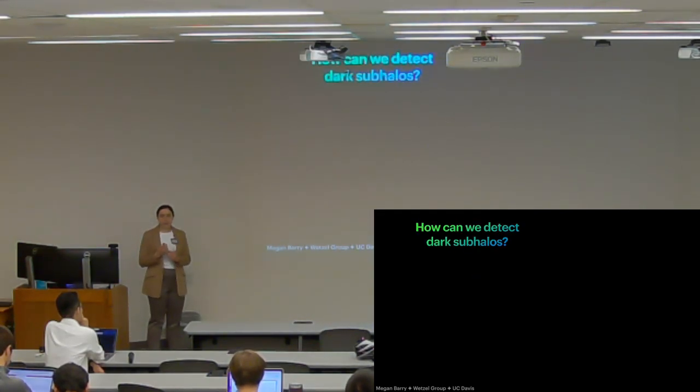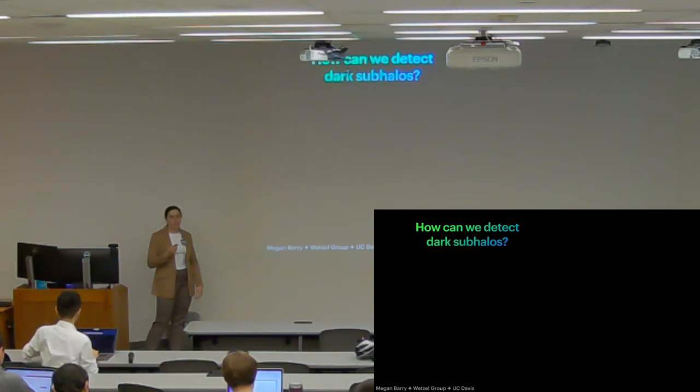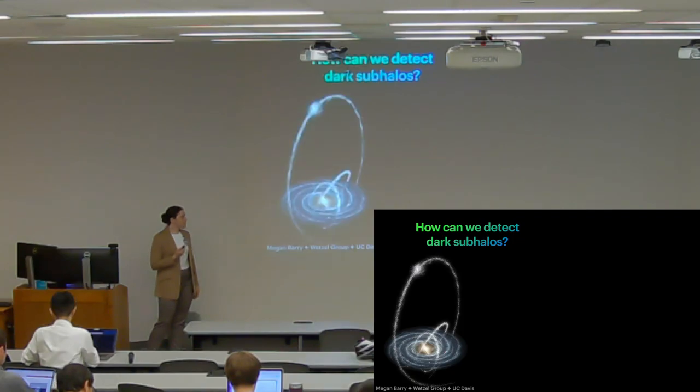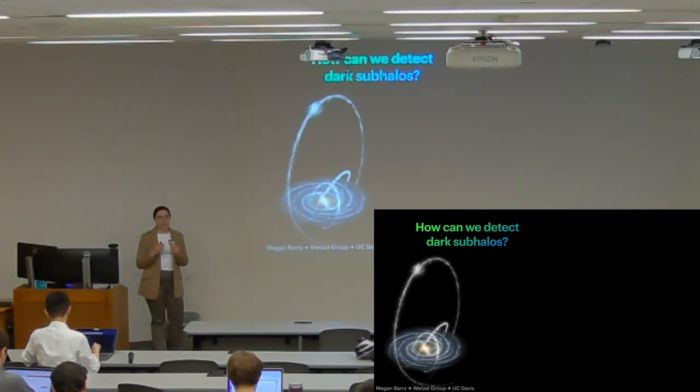So given that these objects are relatively small and dark, how do we stand the hope of detecting them? You can probably guess several ways—gravitational lensing would be a good guess. Today I'm going to focus on another method which, if you've been paying attention to the talk so far, you also might be able to guess: using stellar streams.